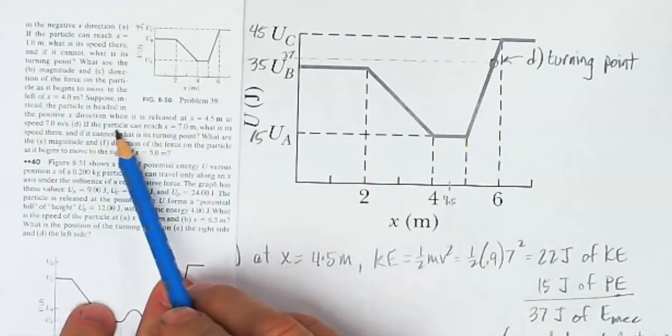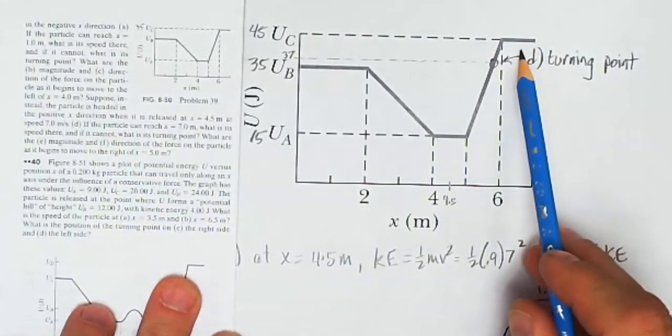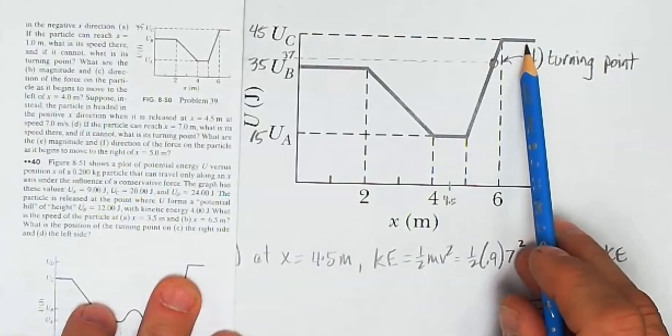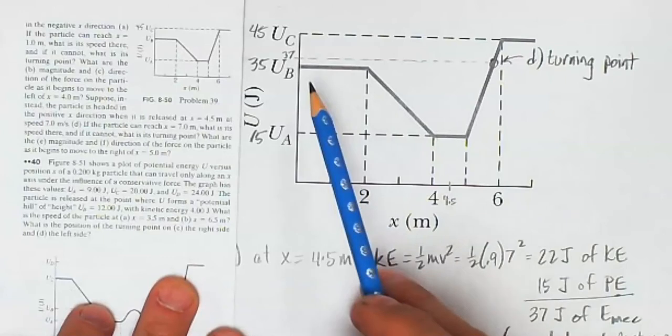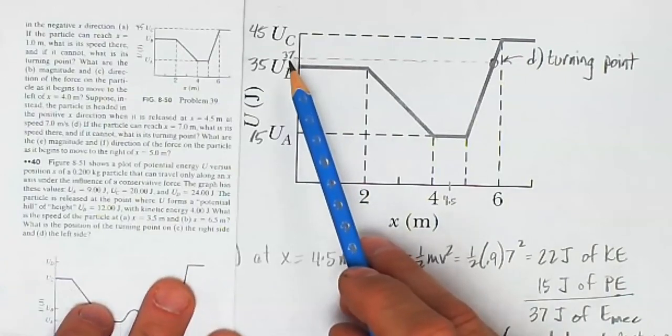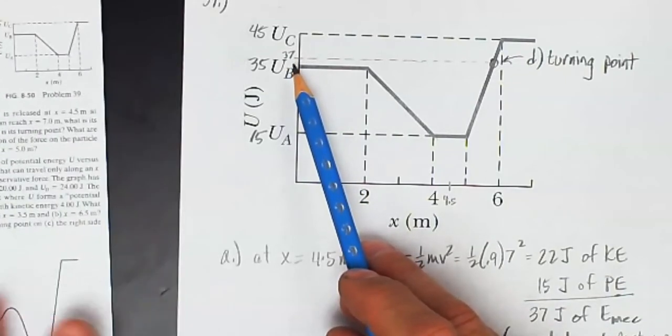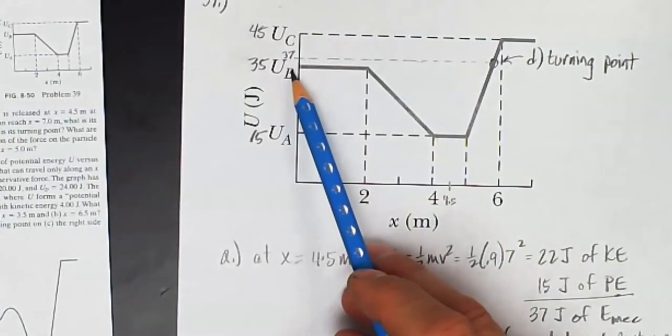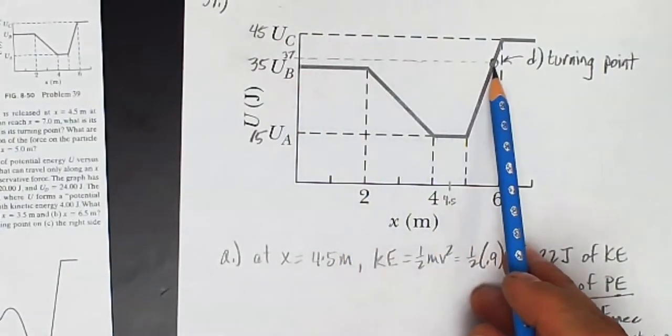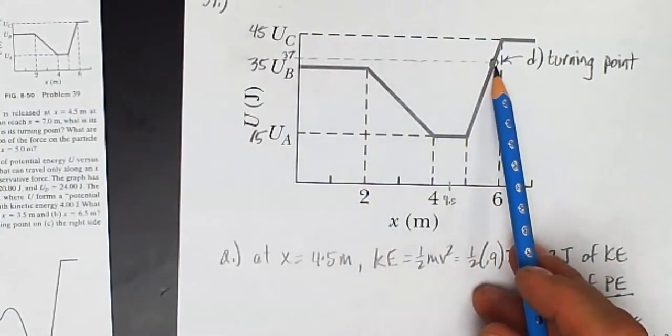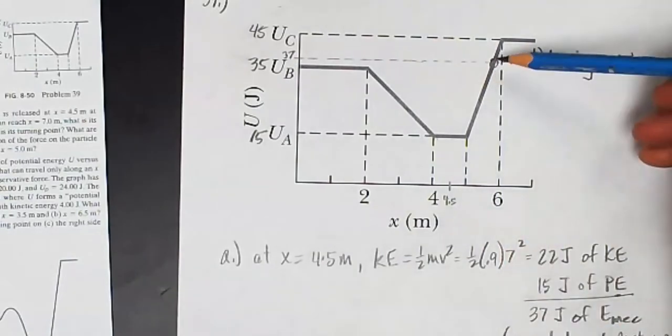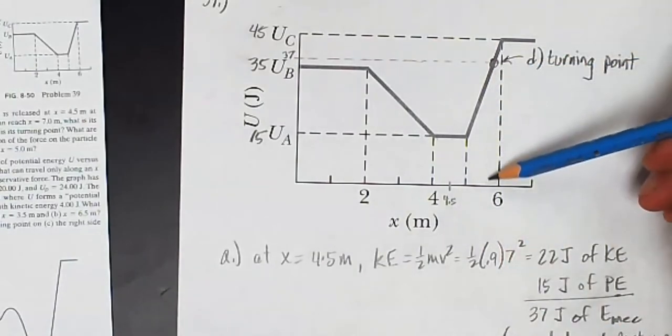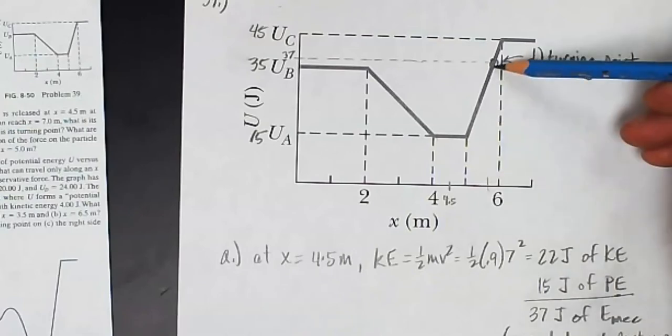Part D. If the particle can reach x equals 7, what is its speed there? And if it cannot, what is its turning point? Well, I've drawn on the graph here, the total amount of mechanical energy we have in the system is 37 joules. And so this is as far as it can make it. There is the turning point. So I have to figure out what is the x value right here of this point.